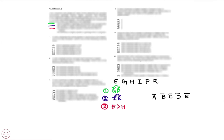Rule number four: he receives a higher grade in geology than in physics. Notice that rule one already told us geology and physics are consecutive, and now rule four tells us geology is the better grade. Combining these two rules, we can deduce that geology beats physics and they're right next to each other — so now we can box them. This is different from Italian and Russian, where we still don't know which direction they go.